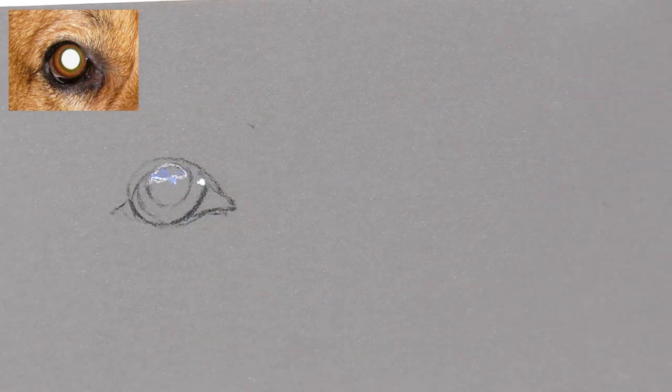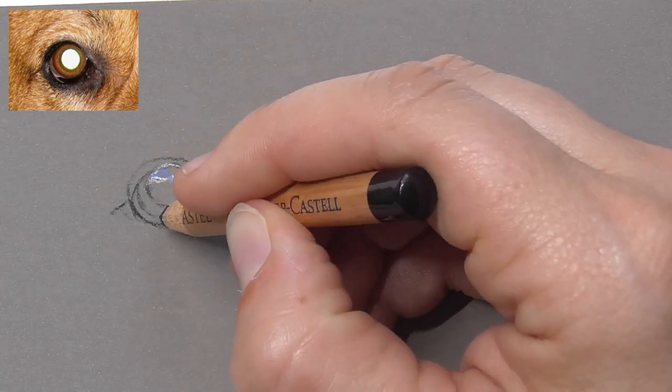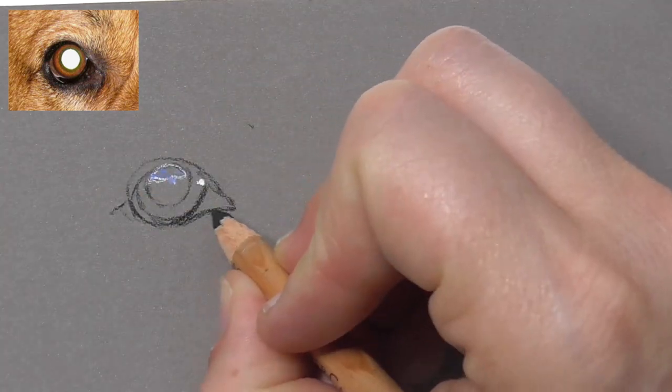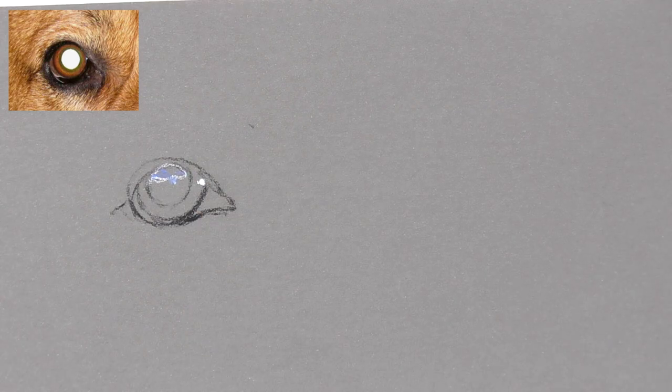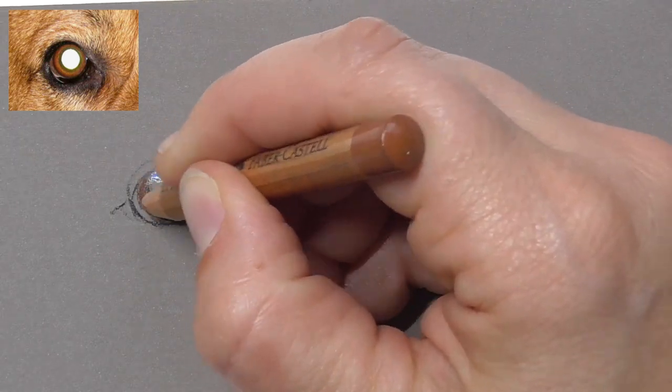And then also add a bit blue here. So we will draw a highlight with sky and little cloud reflections.